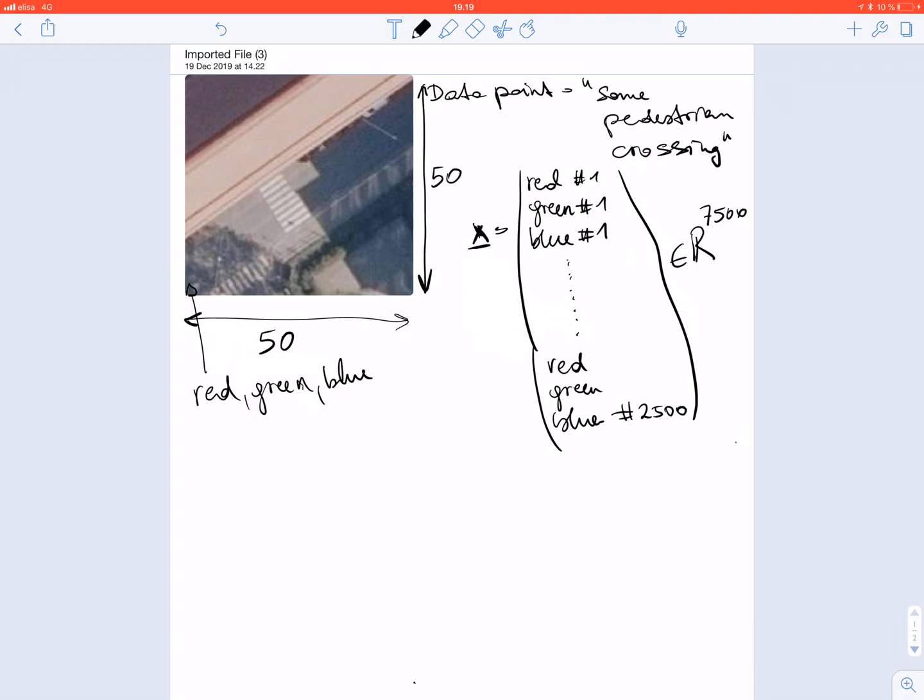The quantity of interest or the label of the data point y could be the numeric value representing the quality of the road marking corresponding to this pedestrian crossing. So we might set this value to a large positive number if the road marking is in excellent shape and we might set this value to a large negative number if the road marking is in very poor shape.